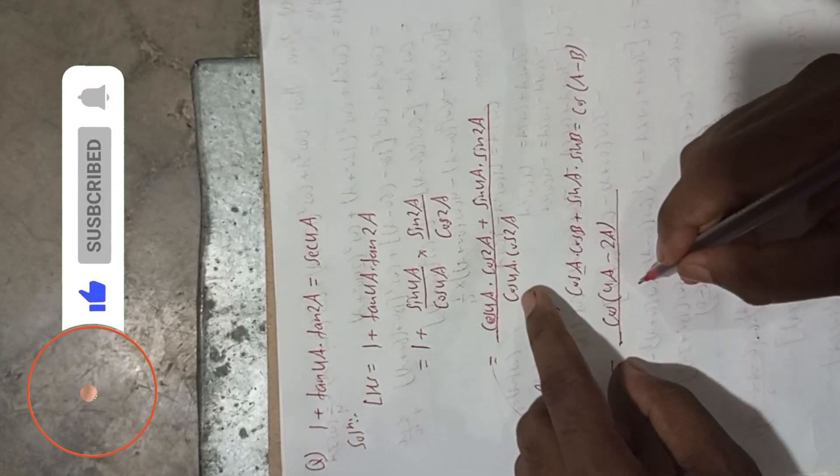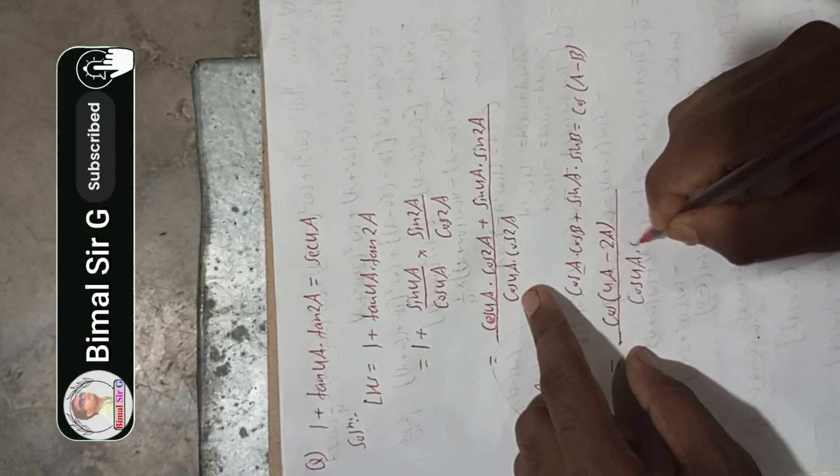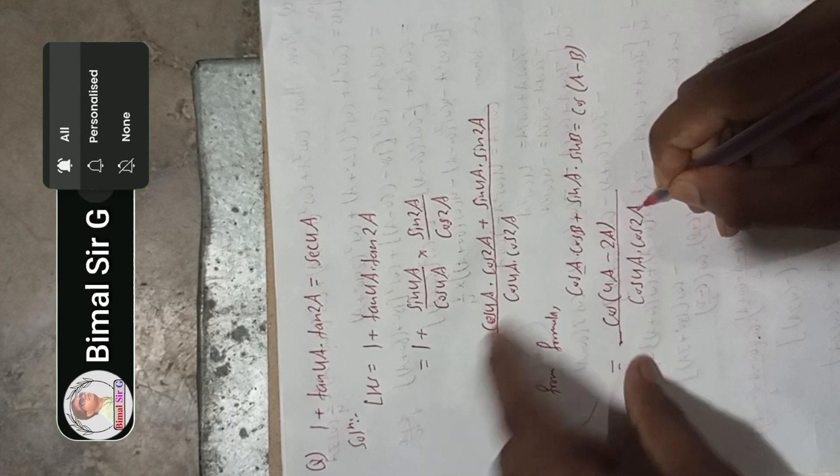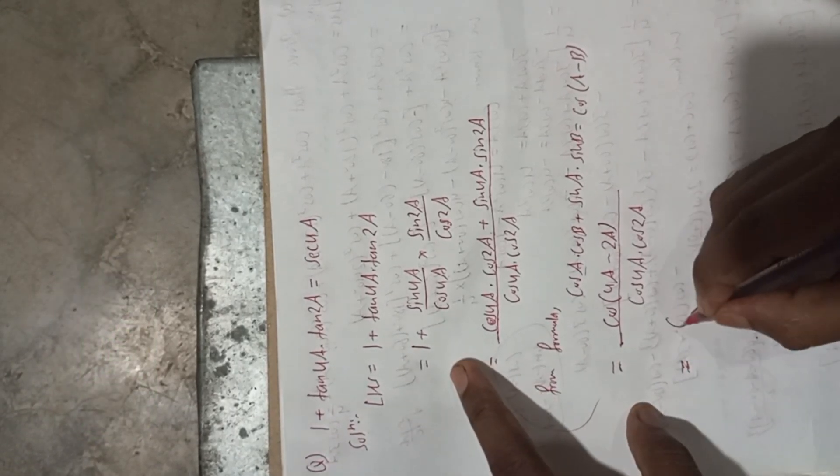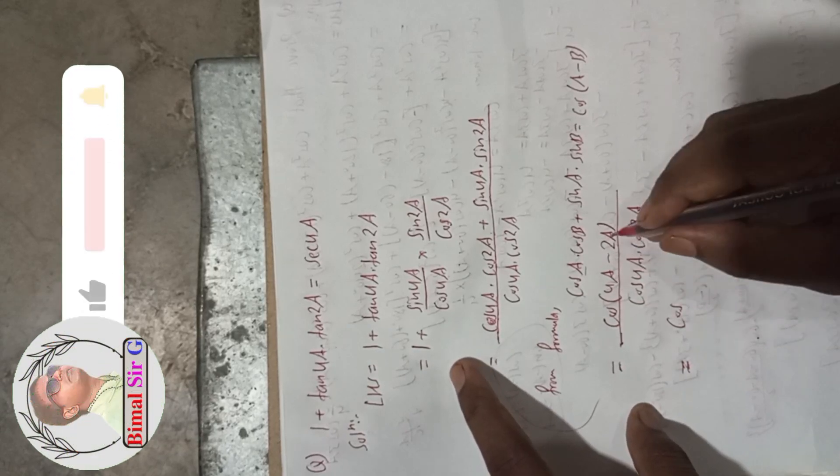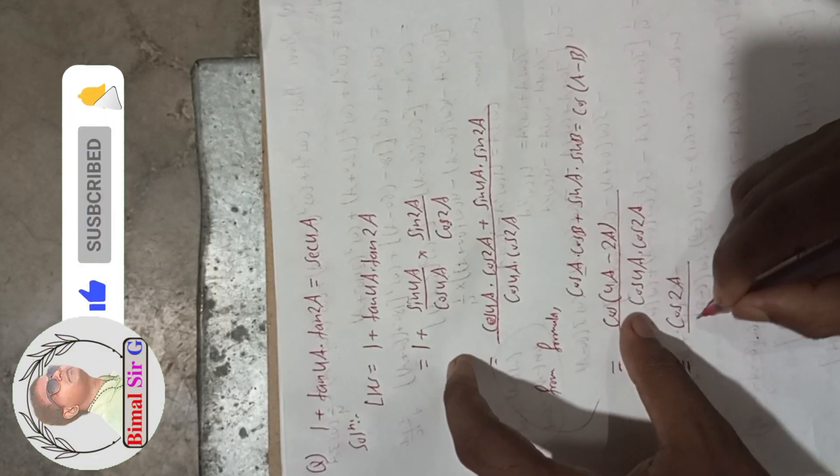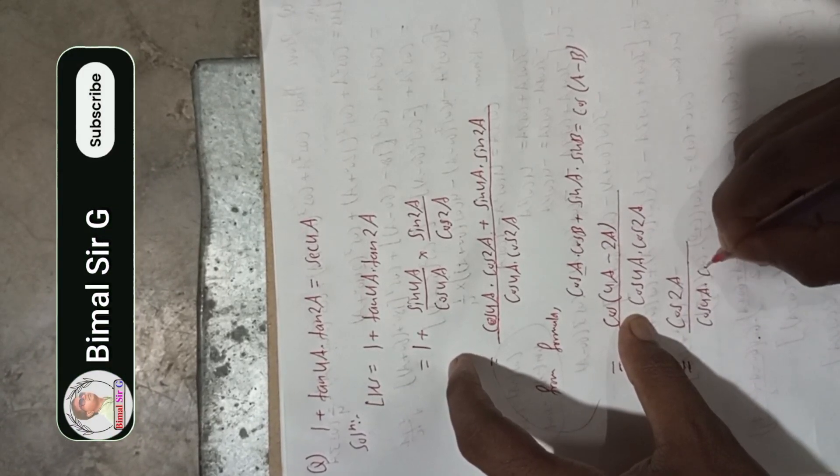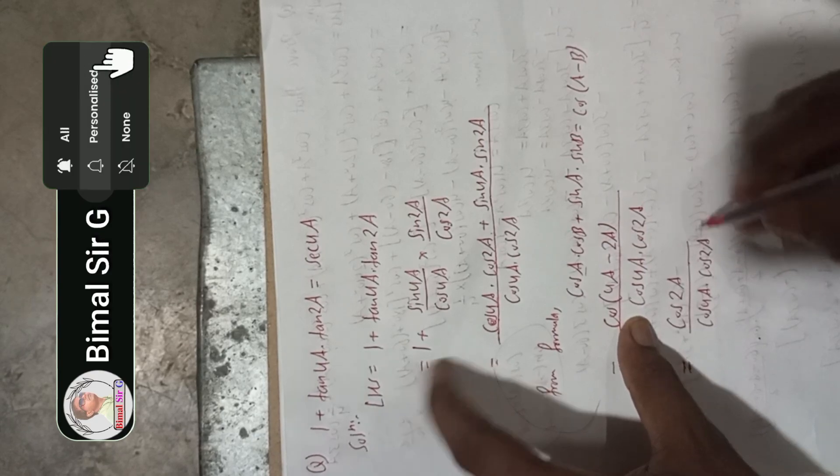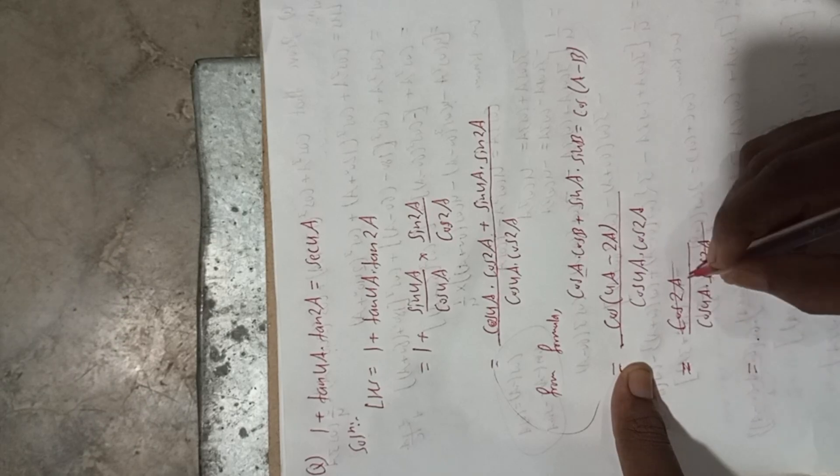Now cos(4a - 2a) = cos(2a) divided by cos(4a) × cos(2a). So cos(2a)/cos(2a) cancels, leaving 1/cos(4a).